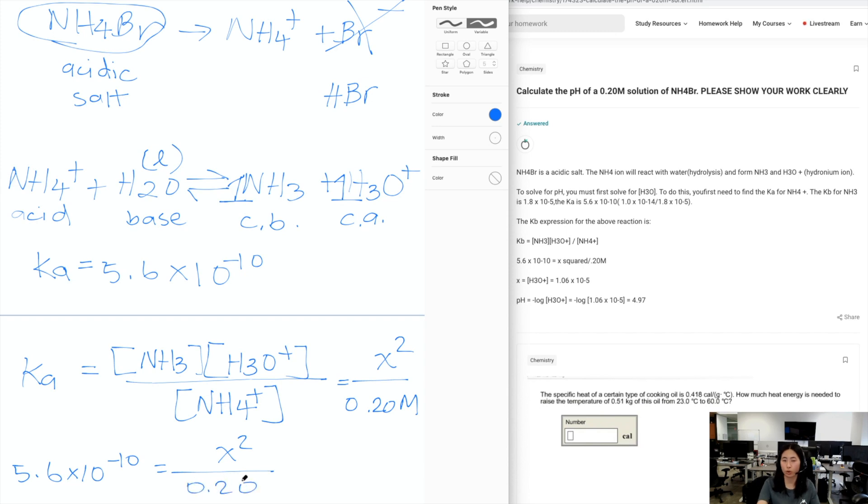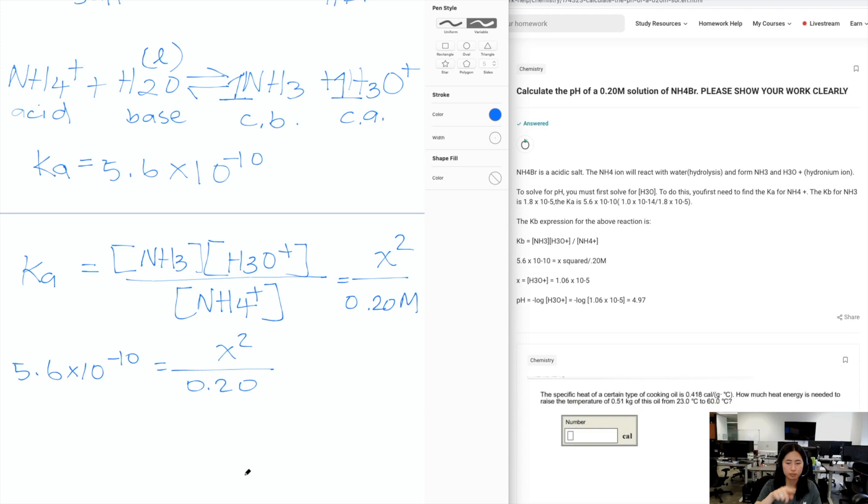So I'm just dropping the molar just for simplicity. And then what I'm doing is I'm multiplying 5.6 times 10 to the negative 10 with 0.20. And then I'm taking the square root after that. 5.6 times 10 to the negative 10 times 0.20. And that's equal to 1 point. So if you multiply this, you would get 1.12 times 10 to the negative 10, and that's equal to X squared. And then you're taking the square root of both sides.